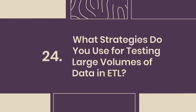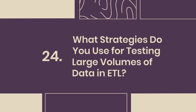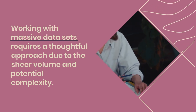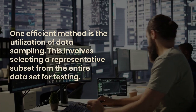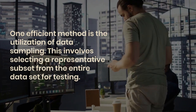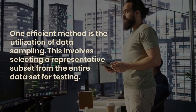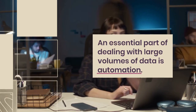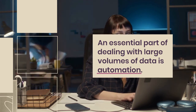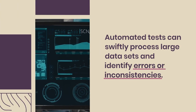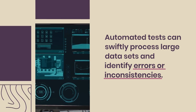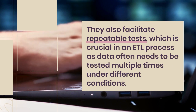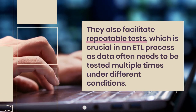Question 24: What strategies do you use for testing large volumes of data in ETL? Working with massive datasets requires a thoughtful approach. Data sampling — selecting a representative subset from the entire dataset — provides a reasonable understanding of data quality without processing all data. Automation is also essential: automated tests can swiftly process large datasets, identify errors or inconsistencies, and facilitate repeatable tests, which is crucial as data often needs to be tested multiple times under different conditions.